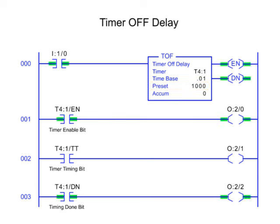The timer off delay sets the enable and done bits when input conditions are true. When the input conditions change to false in the timer off delay instruction, the timer timing bit goes true. As the accumulated value reaches the preset value, the done and timer timing bits turn off.